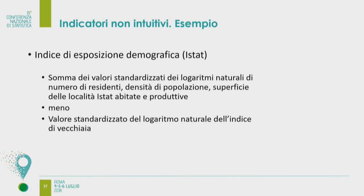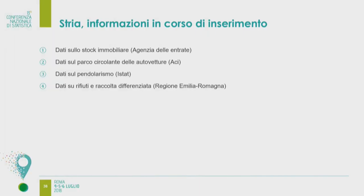Anche l'indice di esposizione demografica ISTAT - che è la somma dei valori standardizzati dei logaritmi naturali del numero di residenze, meno il valore standardizzato del logaritmo naturale dell'indice di vecchiaia - è stato escluso per essere troppo specialistico. Le informazioni in corso di inserimento sono: i dati sullo stock immobiliare dell'Agenzia delle Entrate, i dati del parco circolante di autovetture di fonte ACI, i dati sul pendolarismo al censimento, e i dati su rifiuti e raccolta differenziata.